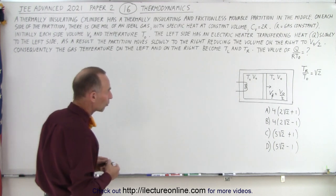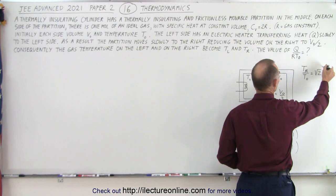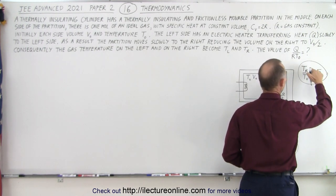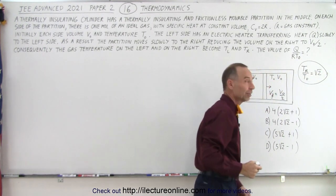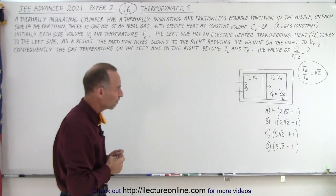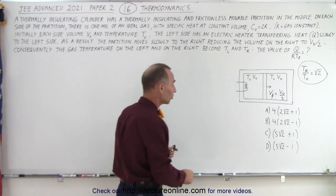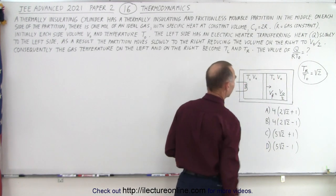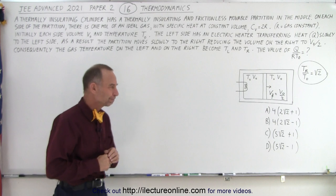Remember that in the previous problem we already determined the ratio of T on the right side — the final temperature on the right side divided by the initial temperature — was equal to the square root of 2. Now they give us four possible answers, A, B, C, and D, for that particular ratio, and only one of those is correct.